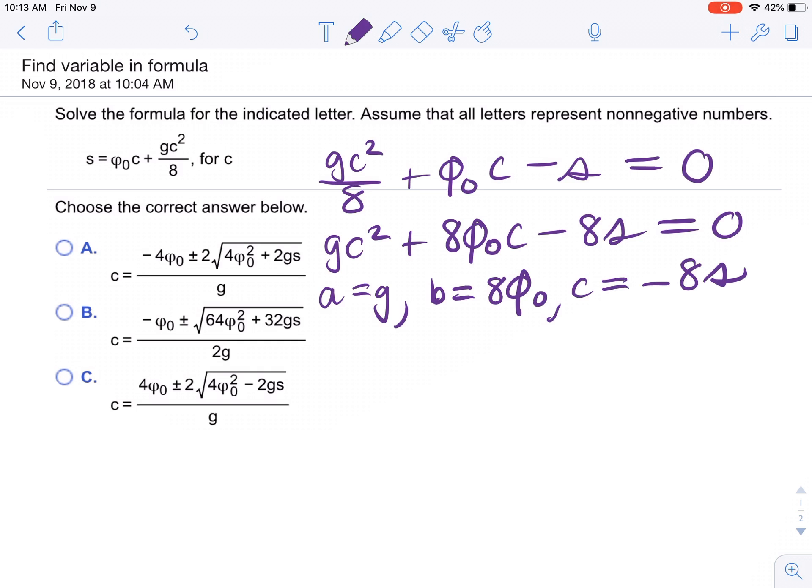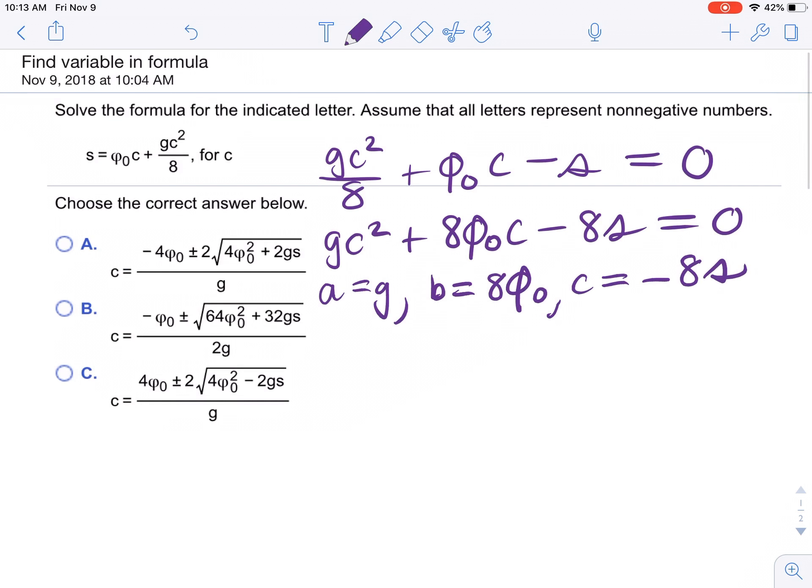So now we can just plug into the quadratic formula. C equals negative 8v sub 0 plus or minus square root of 64v sub 0 squared. Notice that just v sub 0 is squared, already squared the 8.